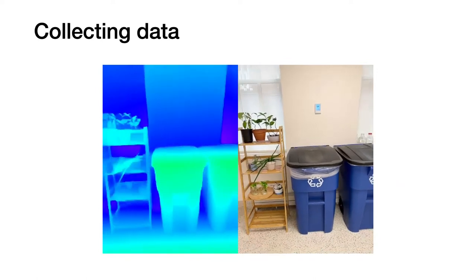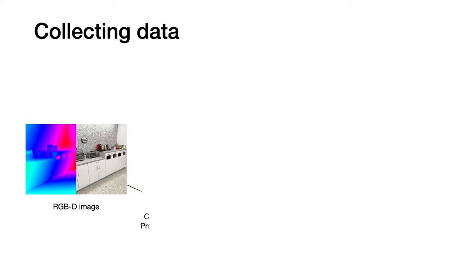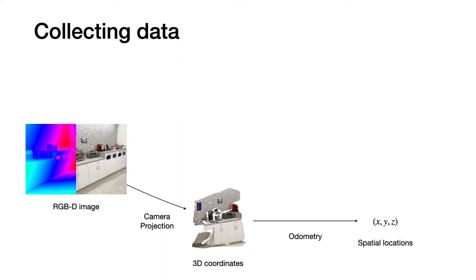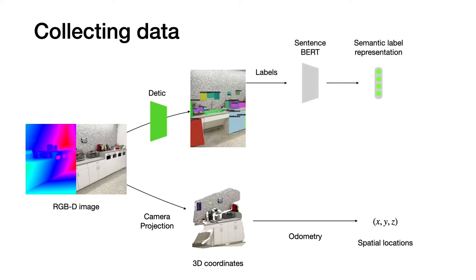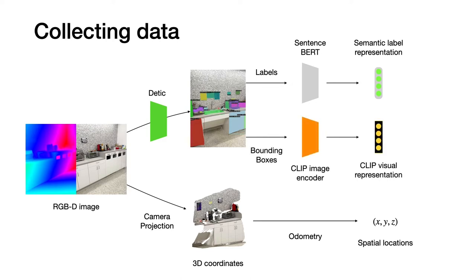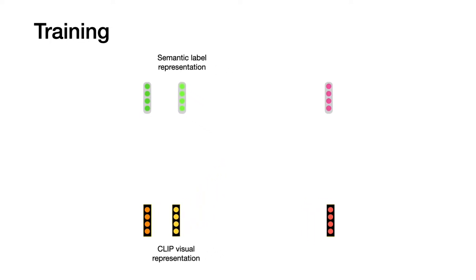In our real world experiments, we use RGBD videos captured with iPhones. We first back-project and map pixels to 3D locations. Then, using a pre-trained DTIC model, we extract objects from the scene. The extracted labels are encoded with Sentence-BERT and the visual features are encoded with CLIP to get our representations. Note that all of our models were trained using pre-trained models only and no human supervision. We train our models with a contrastive loss which pushes representations of similar objects together and dissimilar objects far away.